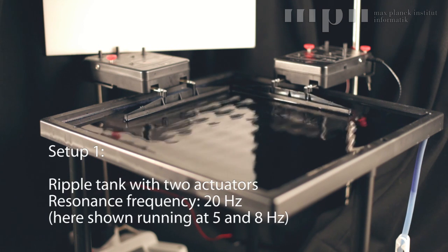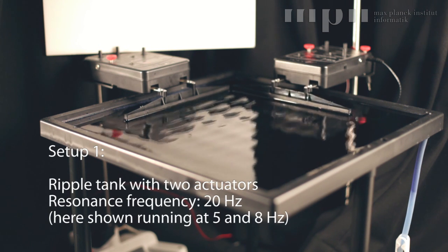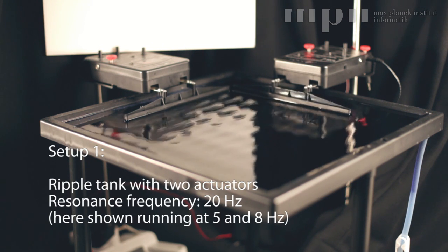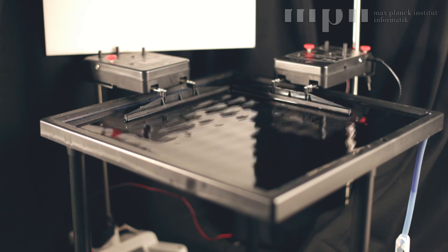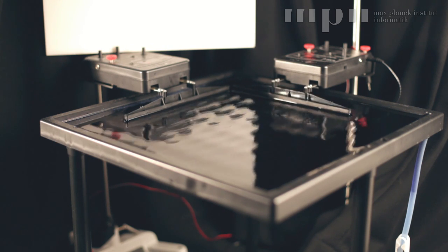Setup 1 is built out of experimentation equipment for physics classes. Here the two actuators excite sine waves of different frequency. Sine-shaped surfaces exhibit a spiky reflectance distribution.